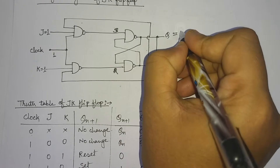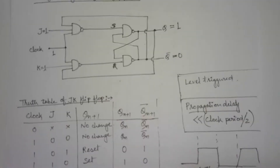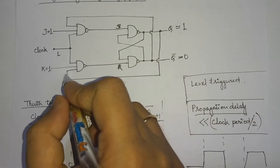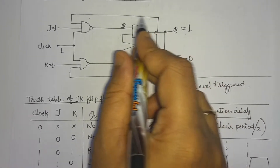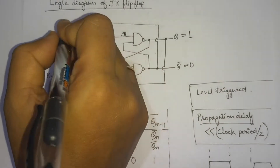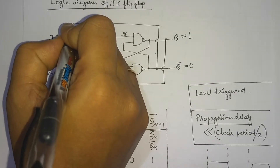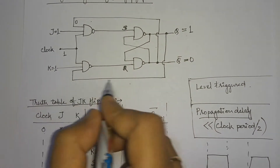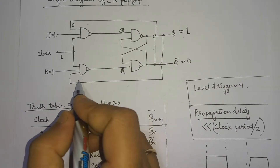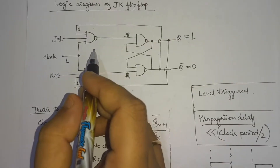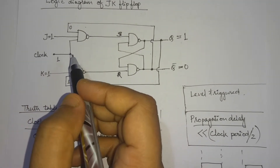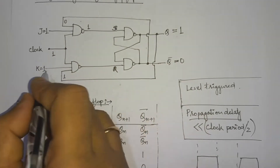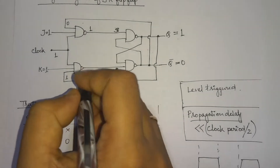With Q=1 and Q-bar=0, the present state output Q is fed back to the K input and Q-bar is fed back to the J input. Since Q-bar is 0, we get 0 at that NAND input, and Q=1 is the feedback to the other NAND input. For a NAND gate, if any one input is 0, the output is 1. So with inputs 0, 1, 1 — the NAND output is 1. The other NAND gate has all inputs as 1, giving output 0. This internal structure is an SR latch using NAND gates. When S=1 and R=0, the output Q will be 0 and Q-bar will be 1.